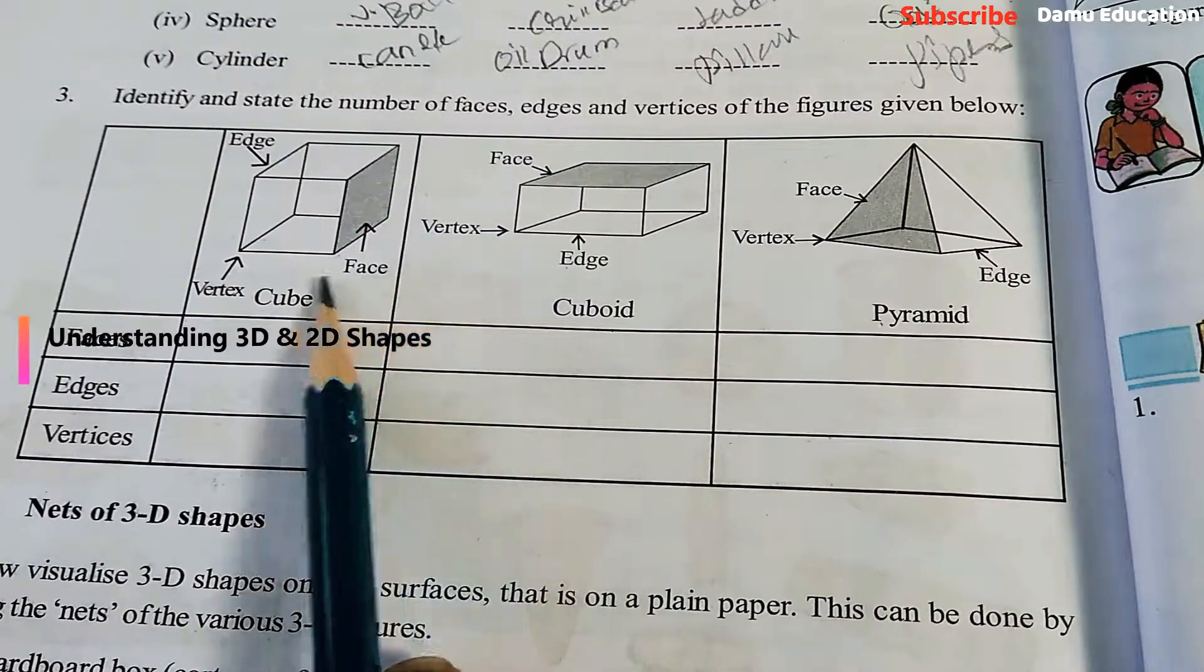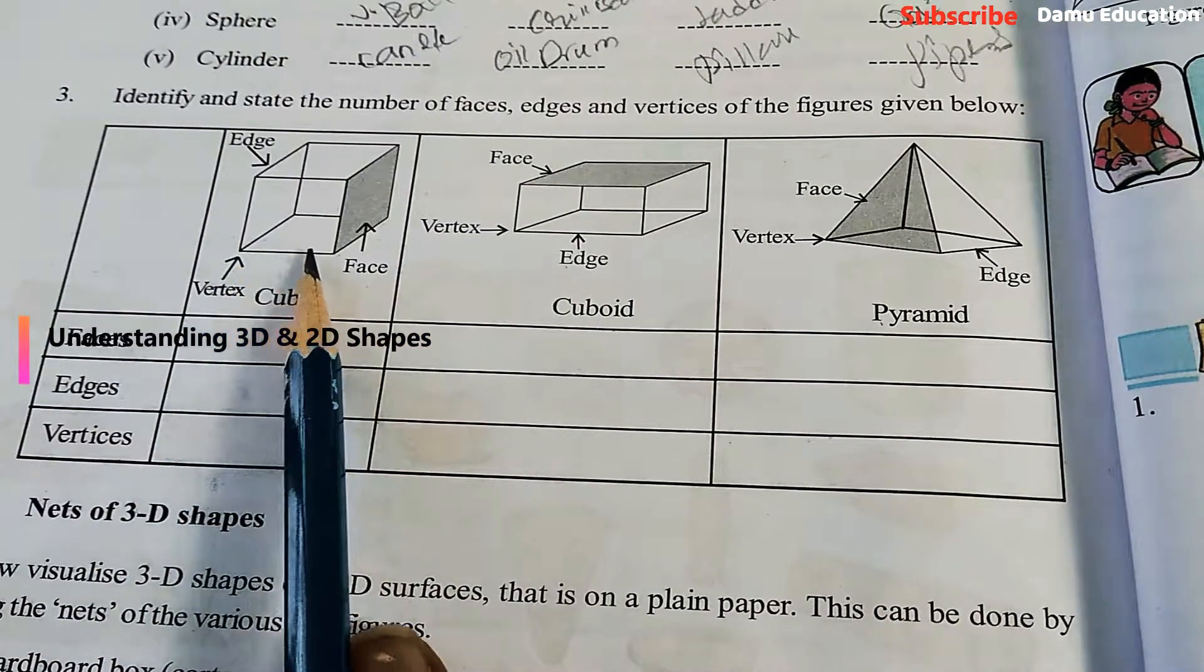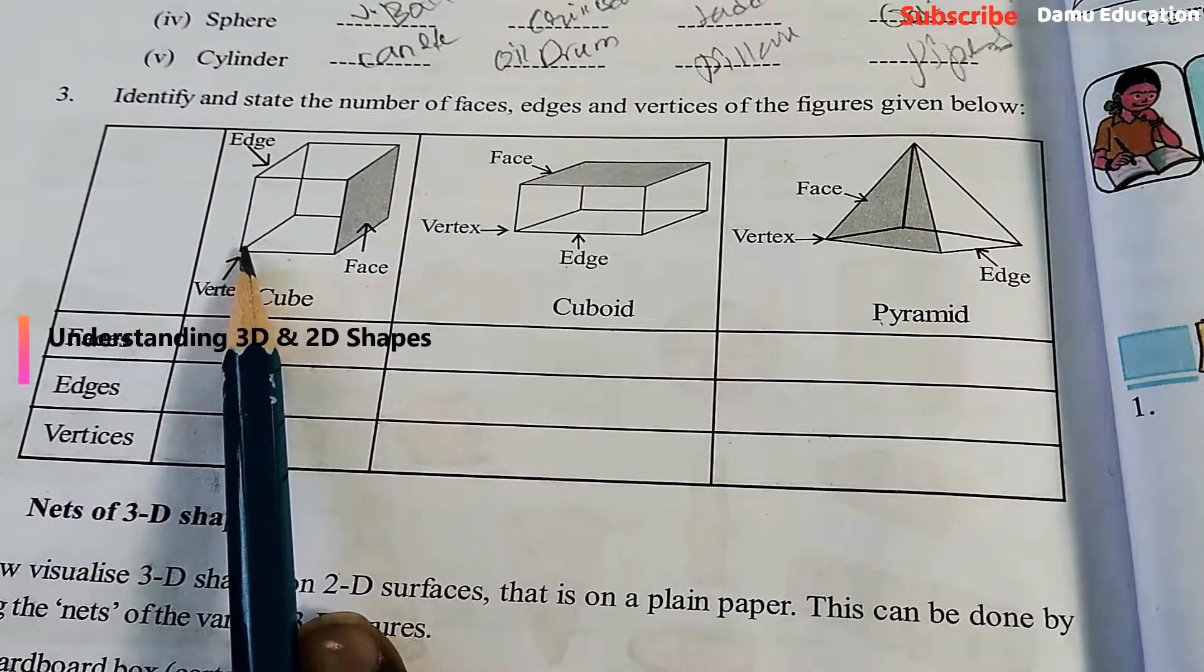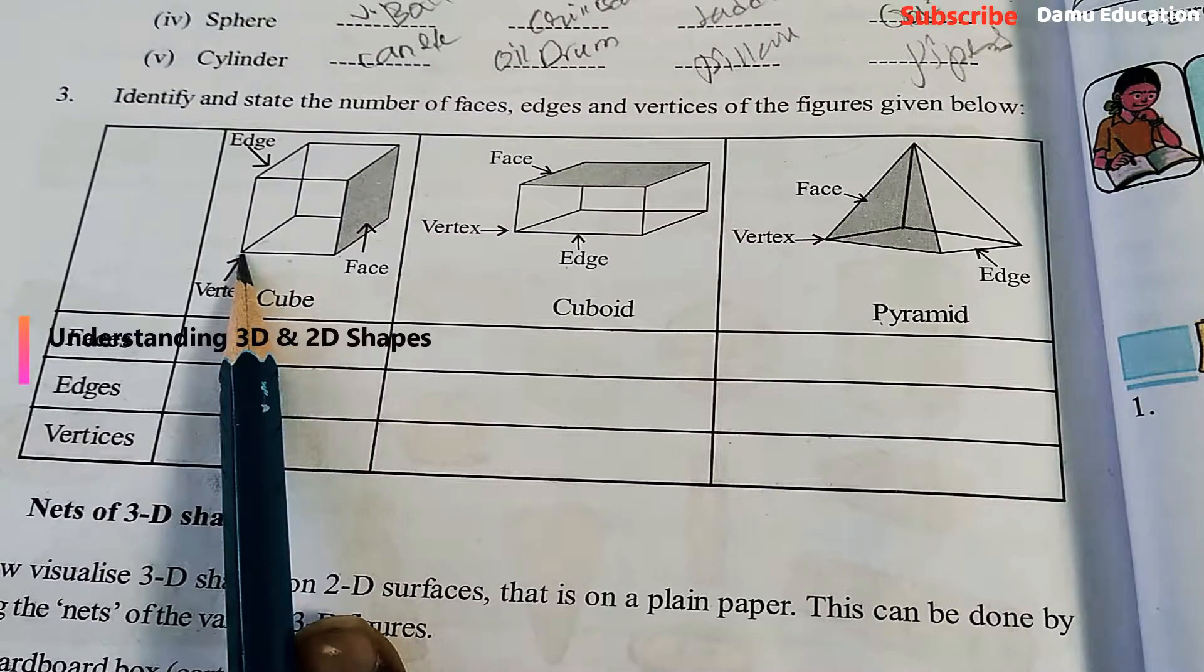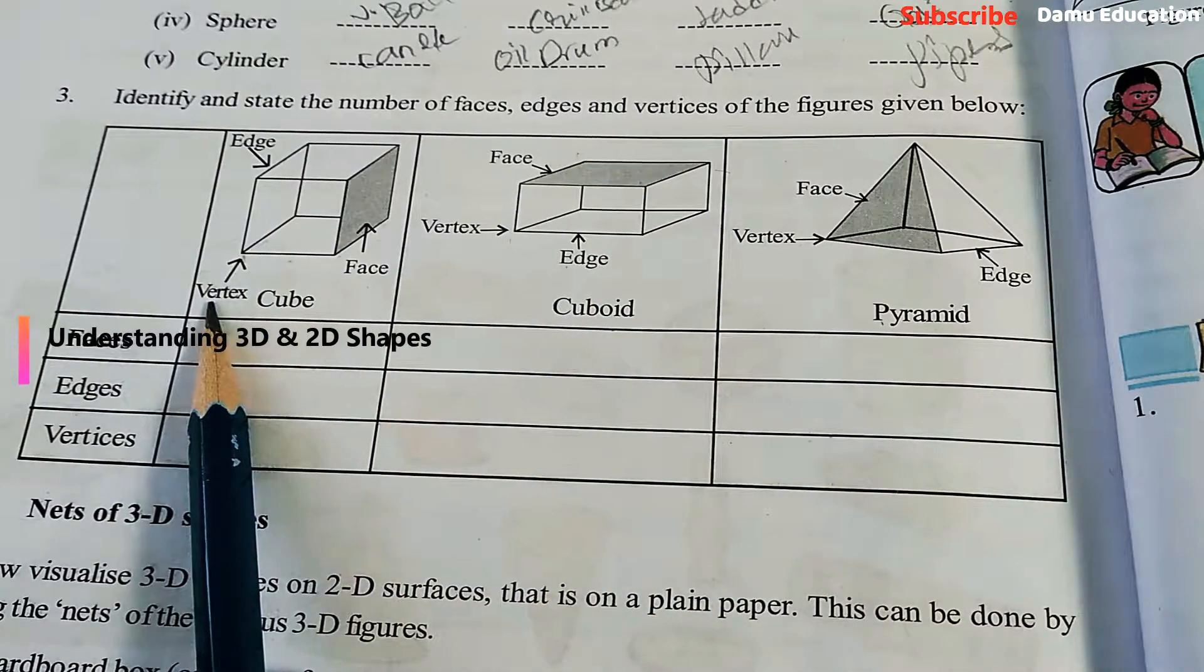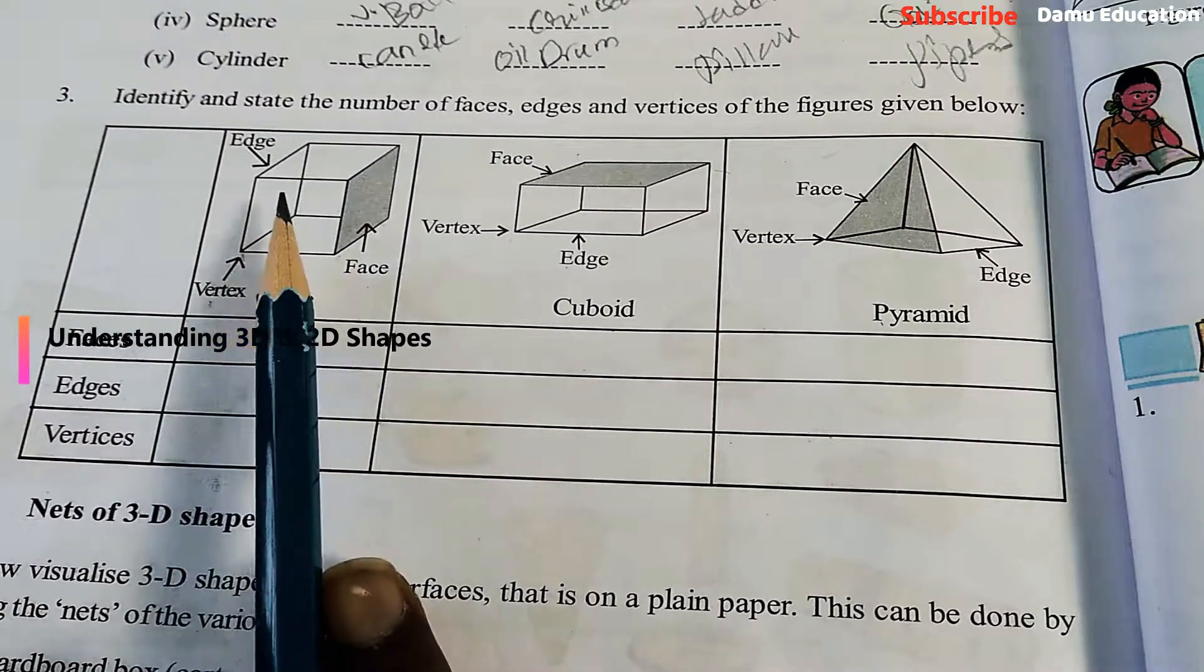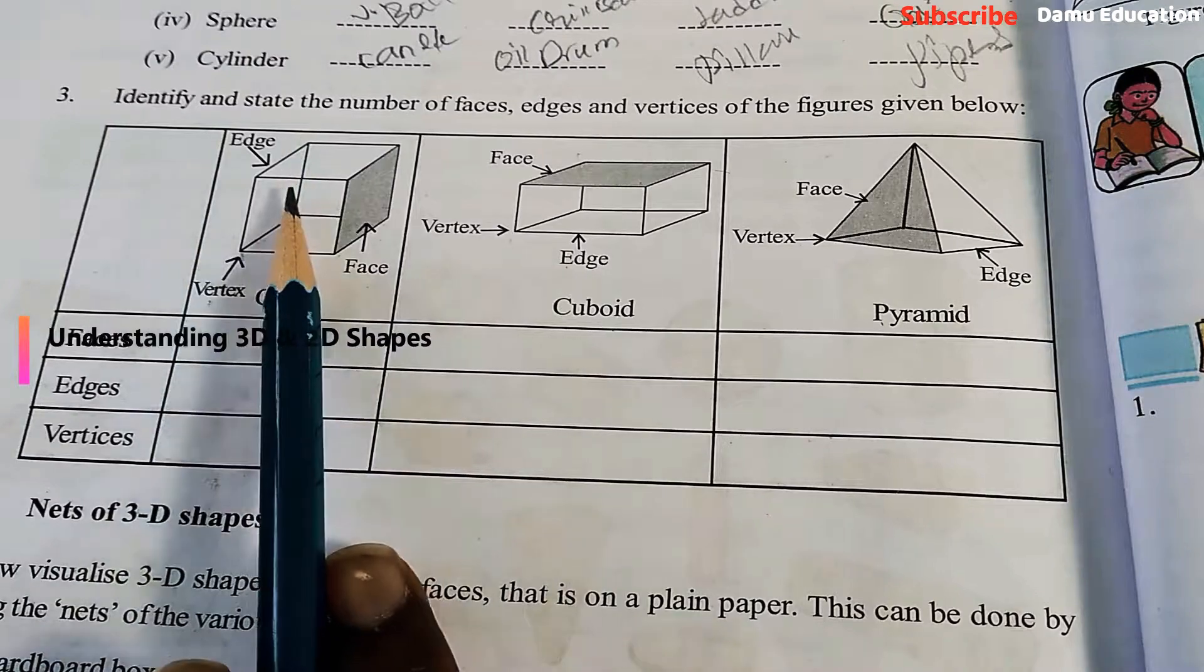Next, what is vertex? Vertex means where two or more than two line segments join at one point. That point is called vertex. Vertices are almost there in corners. Vertex is singular, vertices is plural. Then edge is nothing but the line segment - the side of any shape is called an edge.